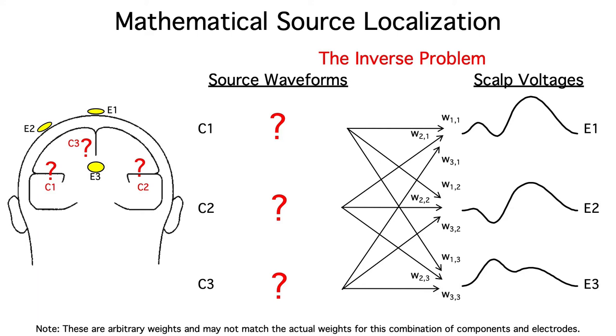Unfortunately, the inverse problem isn't so straightforward. In fact, it's an ill-posed problem. There's an infinite set of underlying generator configurations that could perfectly explain any given observed scalp distribution. To come up with a unique solution for a given observed dataset, we would need to include additional constraints.